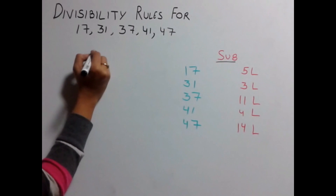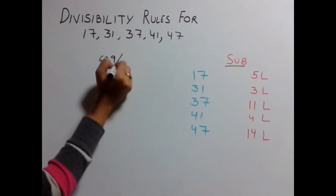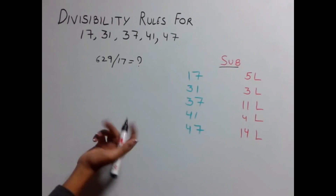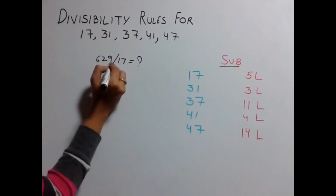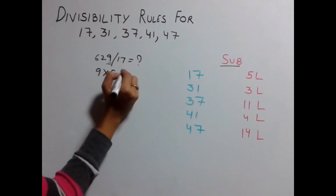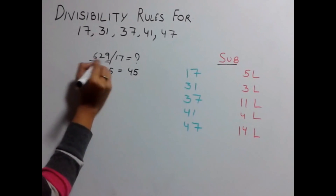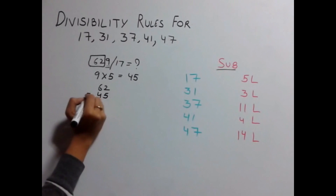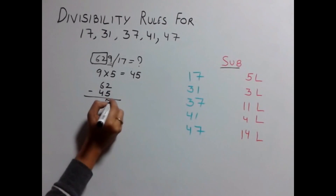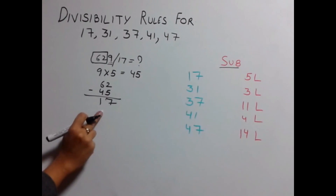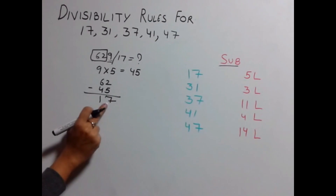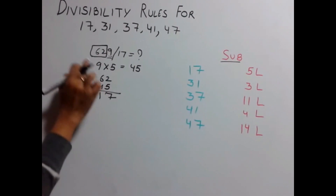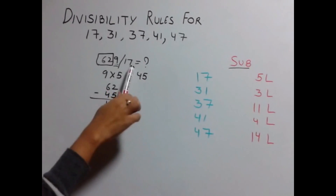Let's take 629 and find out whether it is divisible by 17 or not. For 17, multiply the last digit by 5. The last digit is 9, so 9 × 5 gives you 45. Subtract it from the remaining number, which is 62: 62 − 45 gives you 17. This is your remainder. Since 17 is divisible by 17, our number 629 is also divisible by 17.